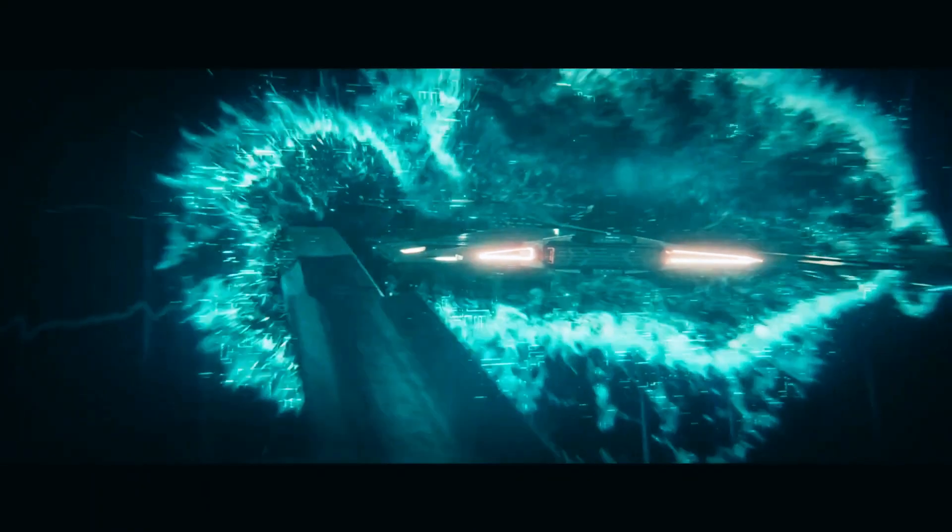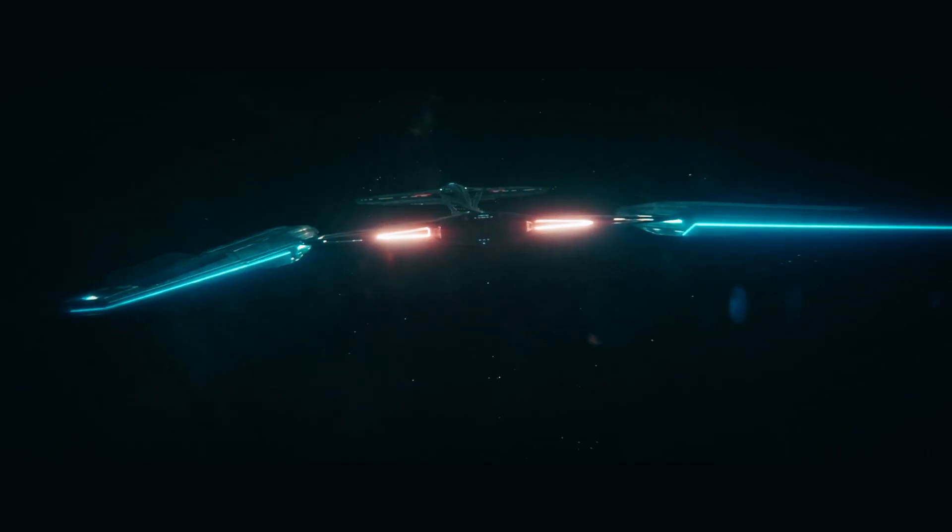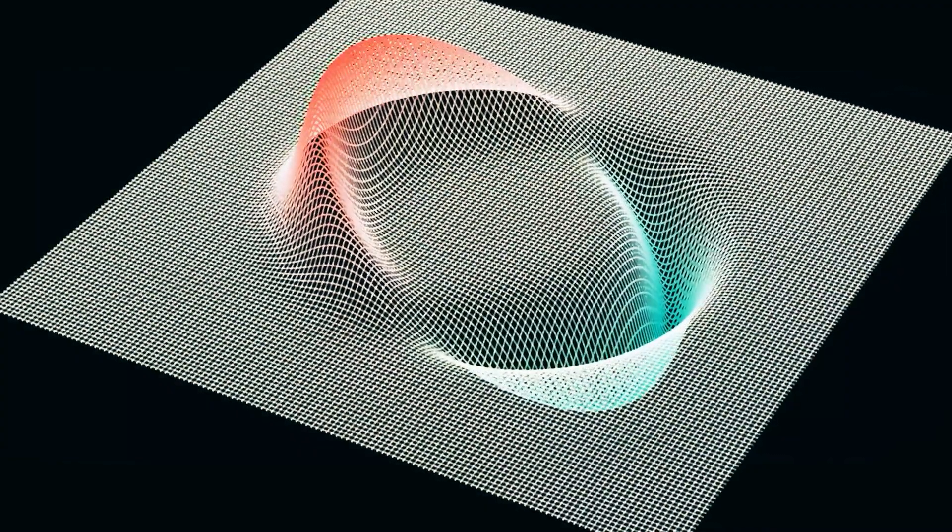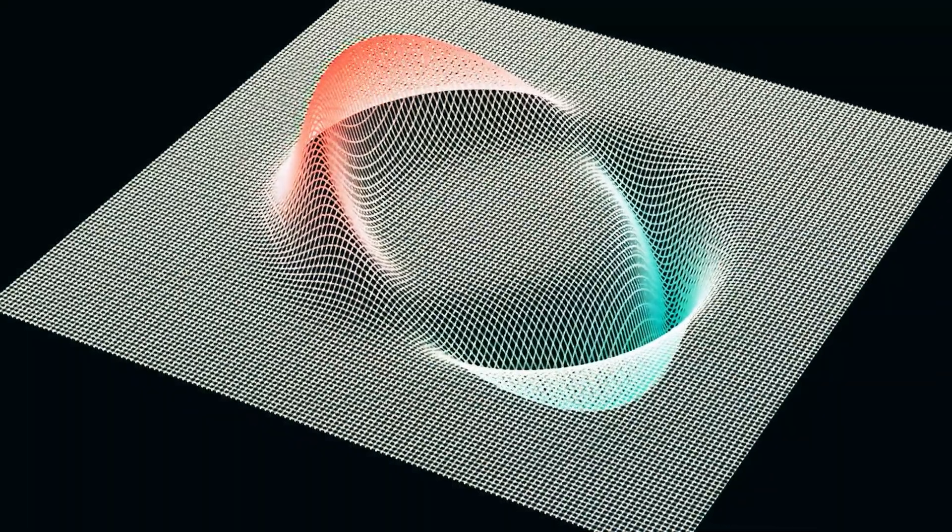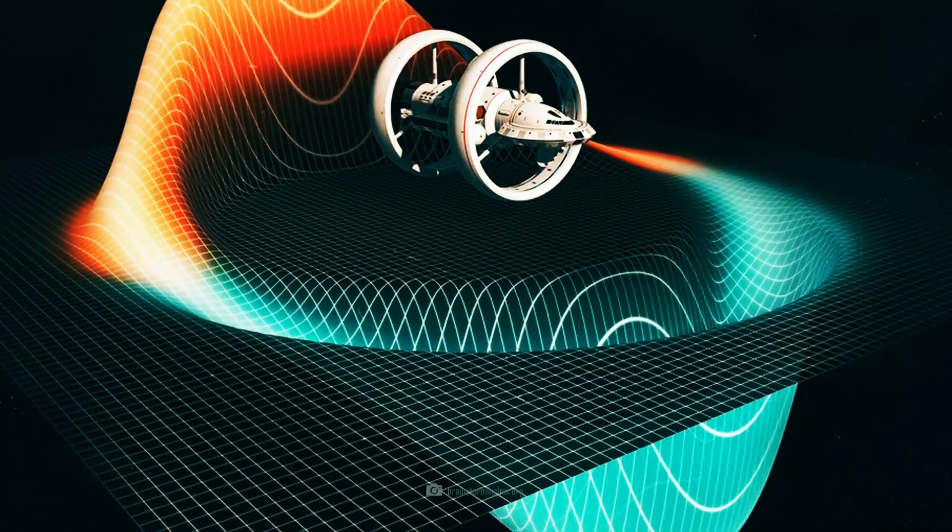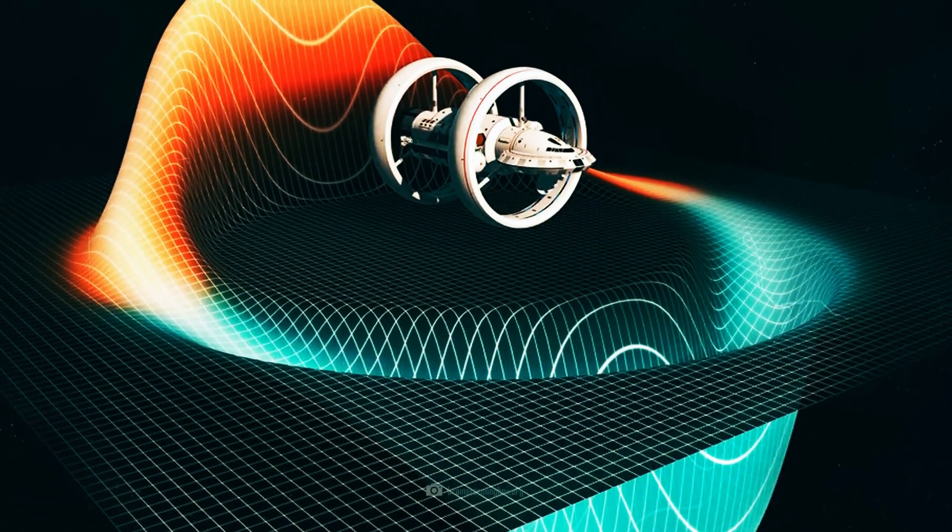The Alcubierre drive avoids breaking the speed of light barrier by manipulating spacetime itself. It works by compressing spacetime in front of a spacecraft and expanding it behind, creating a warp bubble. The spacecraft remains stationary within its local spacetime, avoiding the relativistic issues that make FTL travel impossible. However, the warp bubble itself would be moving faster than light, relative to an outside observer.